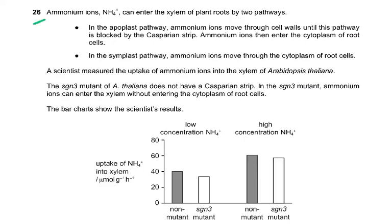Question 26. Ammonium ions can enter the xylem of plant root by two pathways. The apoplast pathway: ammonium ions move through the cell walls until this pathway is blocked by the Casparian strip, and ammonium ions then enter the cytoplasm of the root cells. The simplest pathway: ammonium ions move through the cytoplasm of root cells.